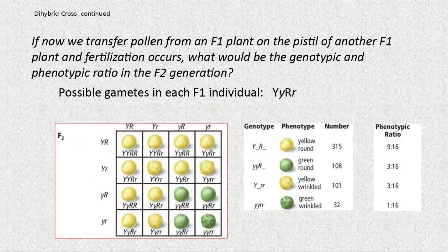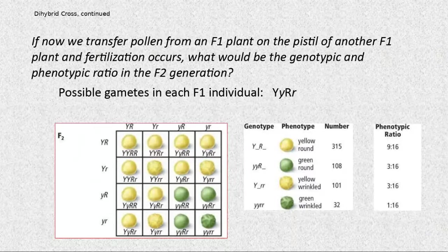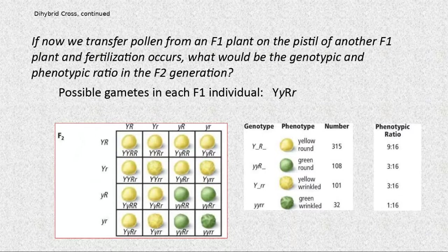They fertilize them and cross them. You place all possible gametes for each F1 individual in the Punnett square. The phenotype ratio shows yellow round: I count one, two, three, four, five, six, seven, eight, nine — that's nine out of 16.